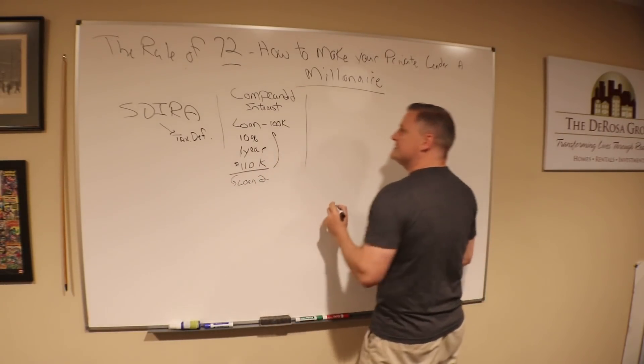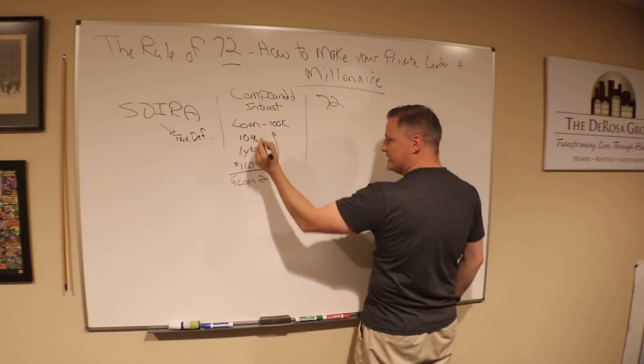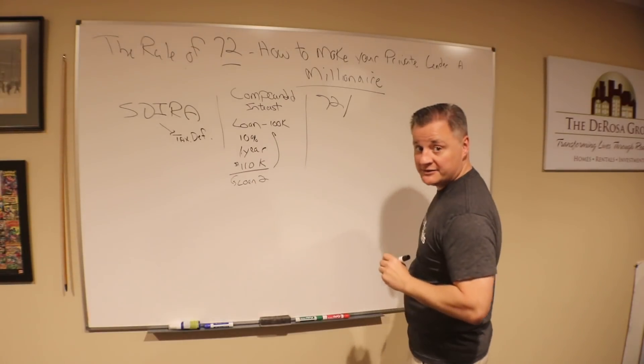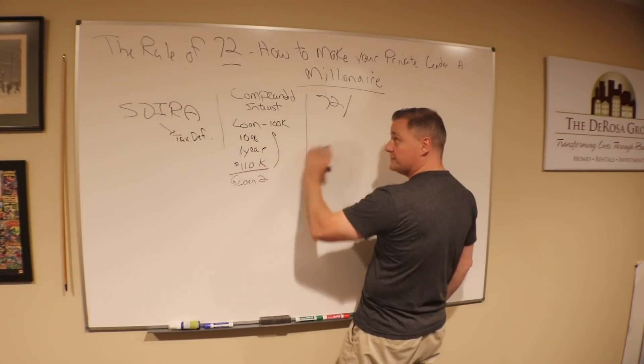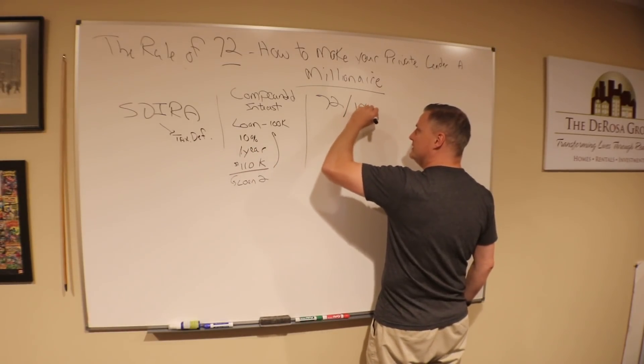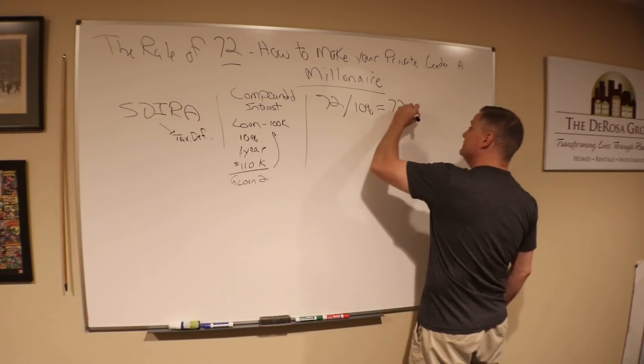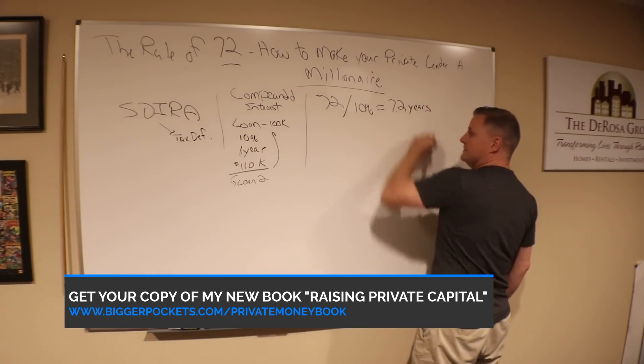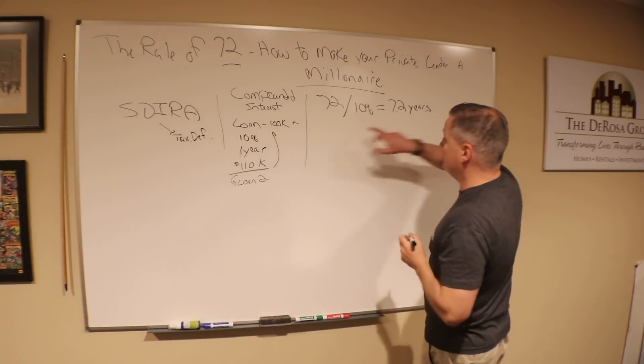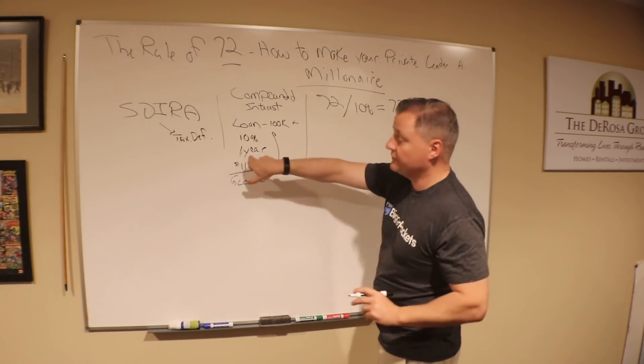Now the Rule of 72 works like this. If you have a compounded interest loan—a 10% one-year loan compounded every year—you take the number 72 and divide it by the interest rate. So for this conversation, it's 10%, and 72 divided by 10 equals 7.2. That 7.2 is how many years it will take that $100K to double. So that $100,000 doubles in 7.2 years.